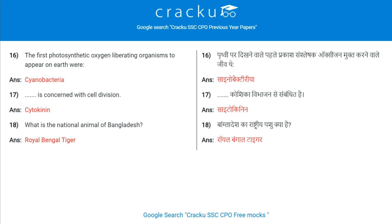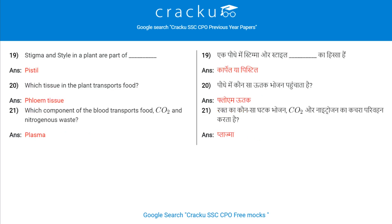What is the national animal of Bangladesh? Royal Bengal Tiger. Stigma and style in a plant are parts of Pistil. Which tissue in the plant transports food? Phloem tissue. Which component of the blood transports food, CO2, and nitrogenous waste? Plasma.